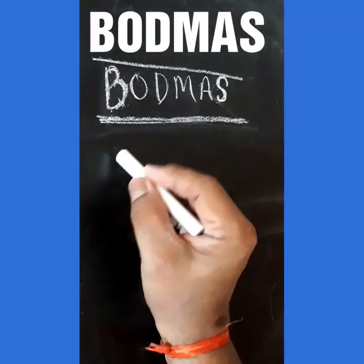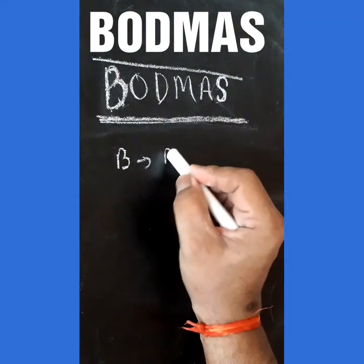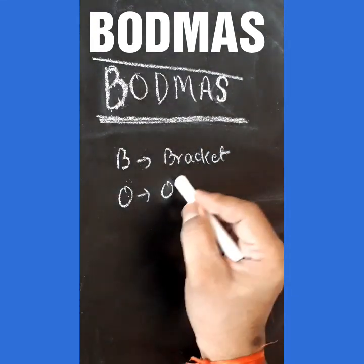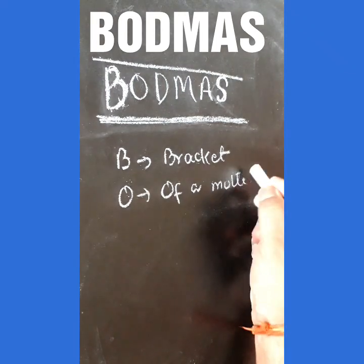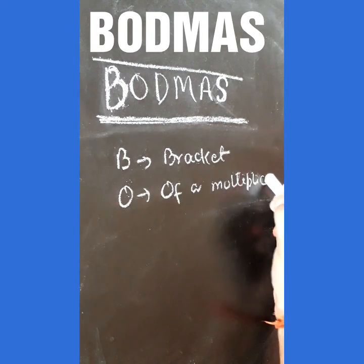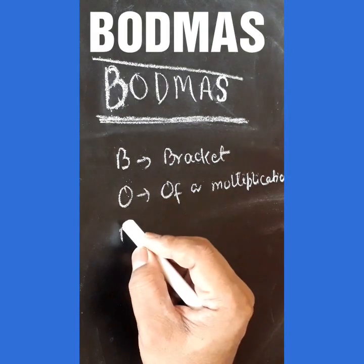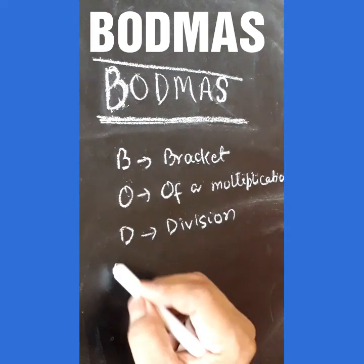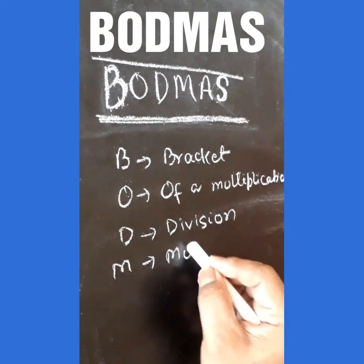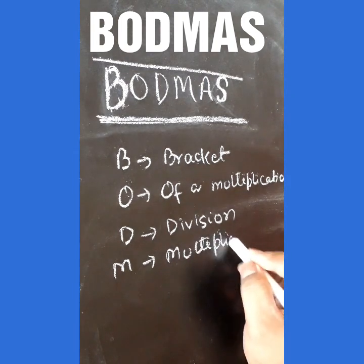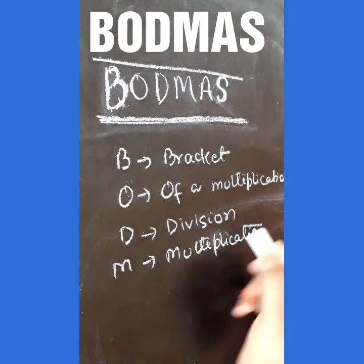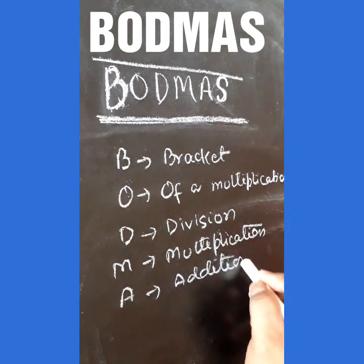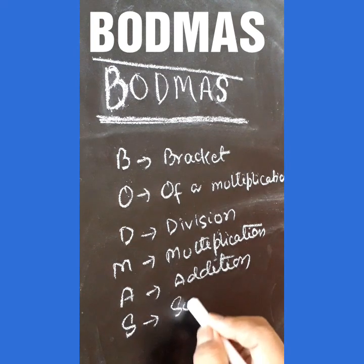We are going to see BODMAS here. B for Bracket, O for Off, D for Division, M for Multiplication, A for Addition, and finally S for Subtraction.